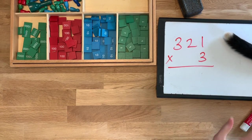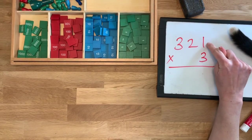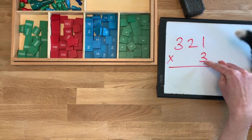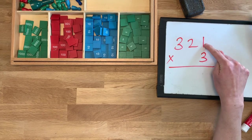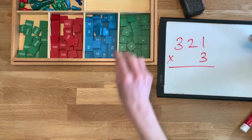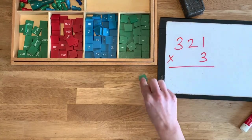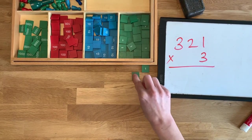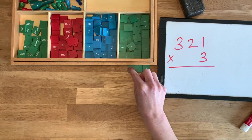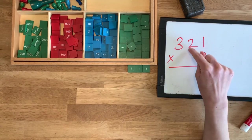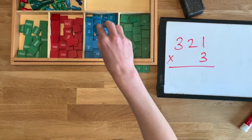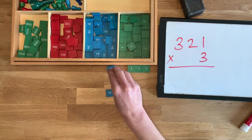So what this means is that we want to get each of these places out three times. So in my units place I have one unit — I want to get it out three times. Here's one one time, here's one two times, here's one three times. So I need to get two tens out three times.